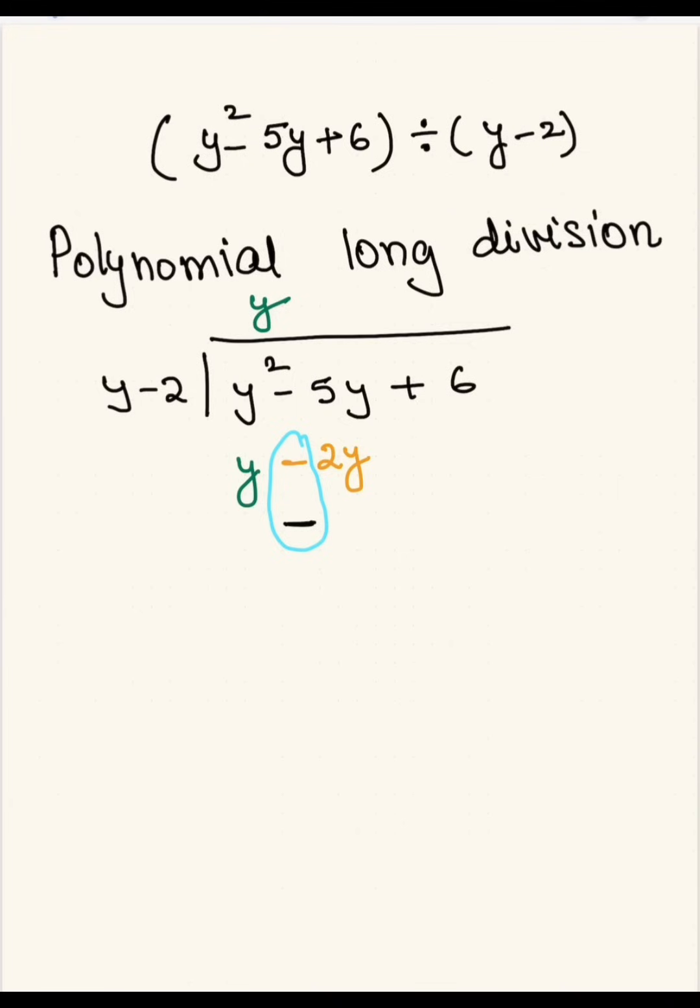The sign flips and it becomes negative. And a negative and a negative becomes positive. So a negative sign just flips the sign of the term.